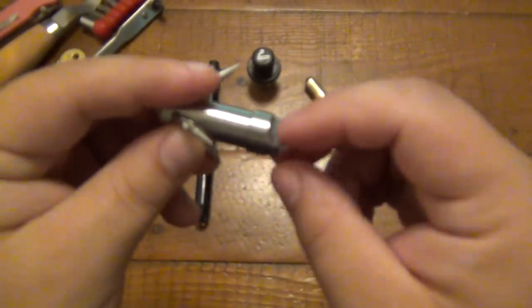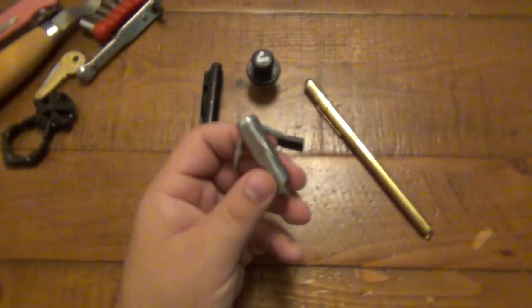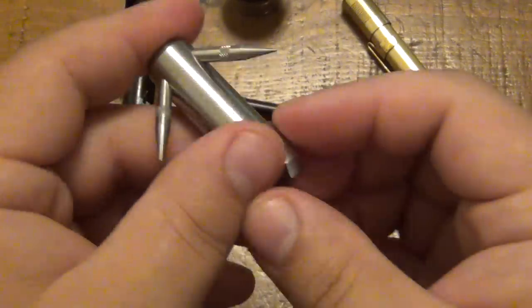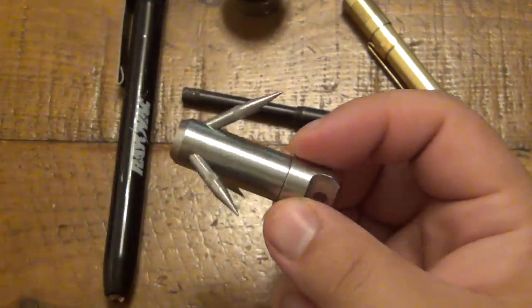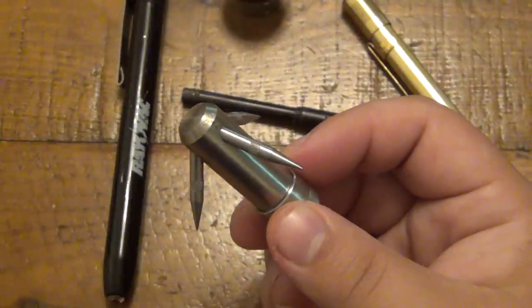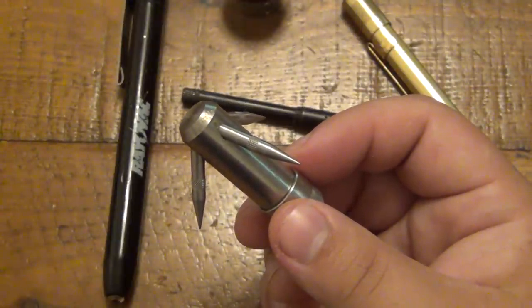But you screw that bottom cap back on. You would tie some paracord through here or whatever kind of cordage you want. And yeah, and you can use this as a grappling hook.